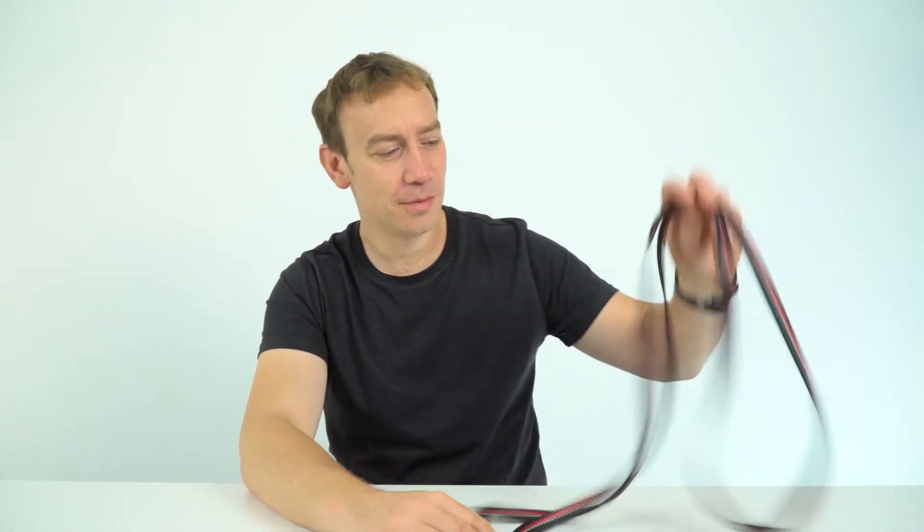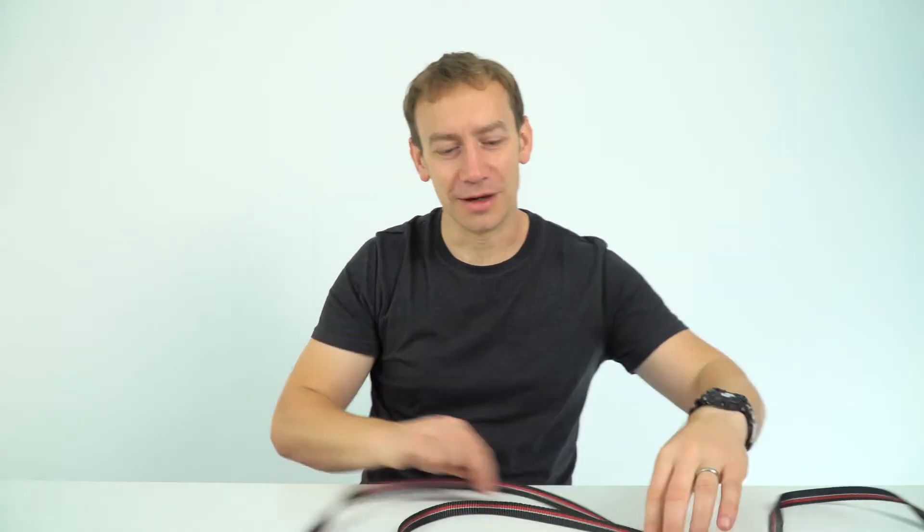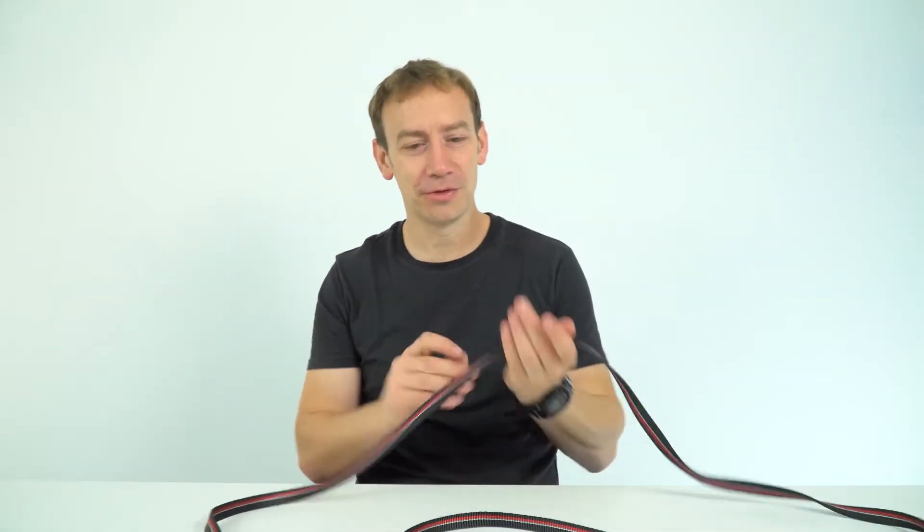So we can use this loop of rope to kind of model what happens inside a real electric circuit. Now, I'm going to be the power source. I'm just going to hold this in my hand, so I'm going to be the one who's actually moving the rope.